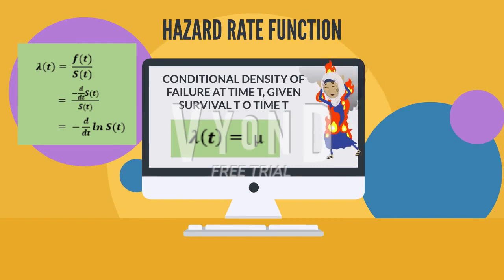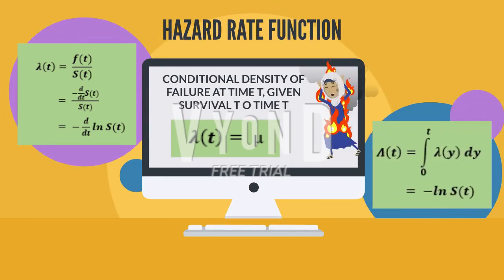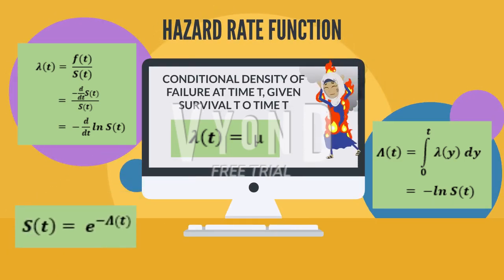The unconditional density of failure at time t equals negative differentiate capital S. So we can conclude that the hazard rate equals negative differentiate ln S. The cumulative hazard function (CHF) is the summation of the hazard function or force of mortality. So CHF equals the integral of the hazard rate from zero to t, and it is also equal to negative ln S. Finally, capital S equals exponential to the power of negative the cumulative hazard function.